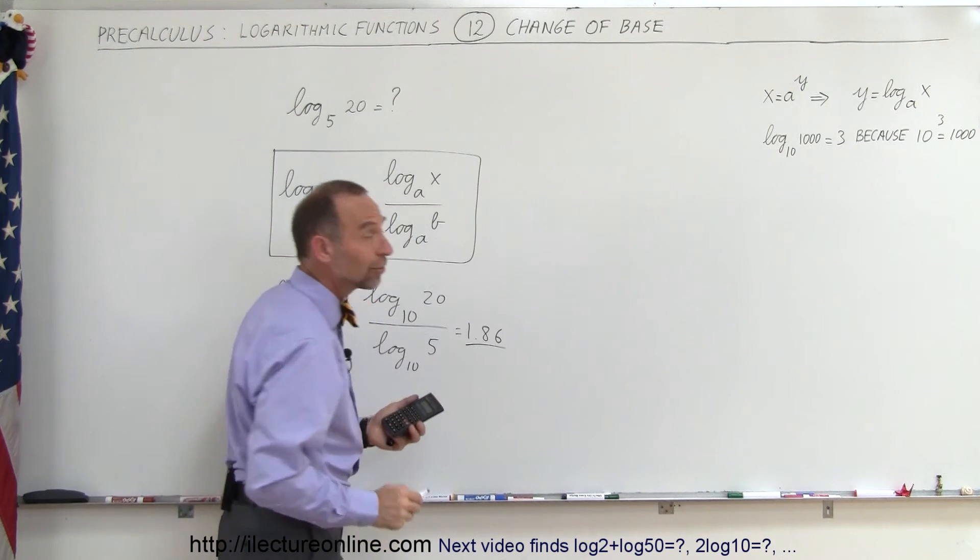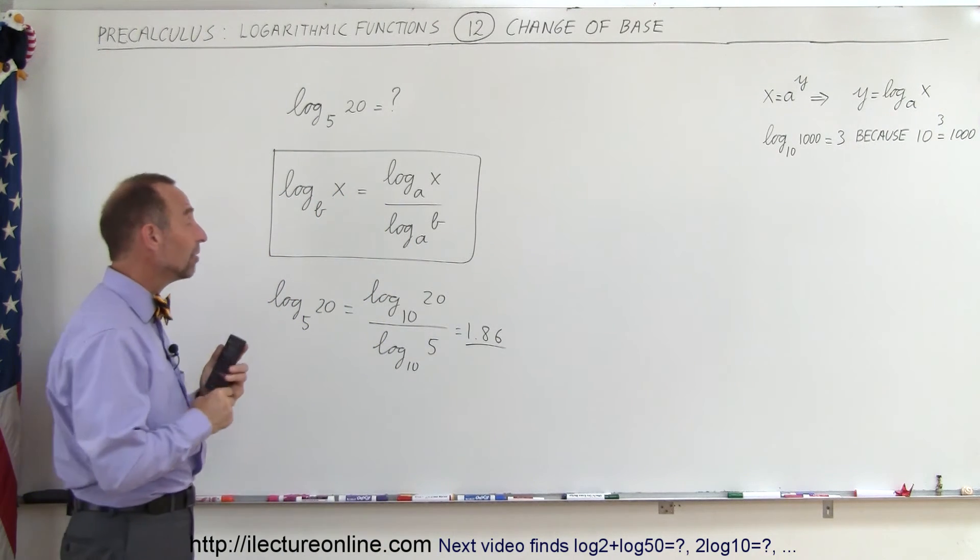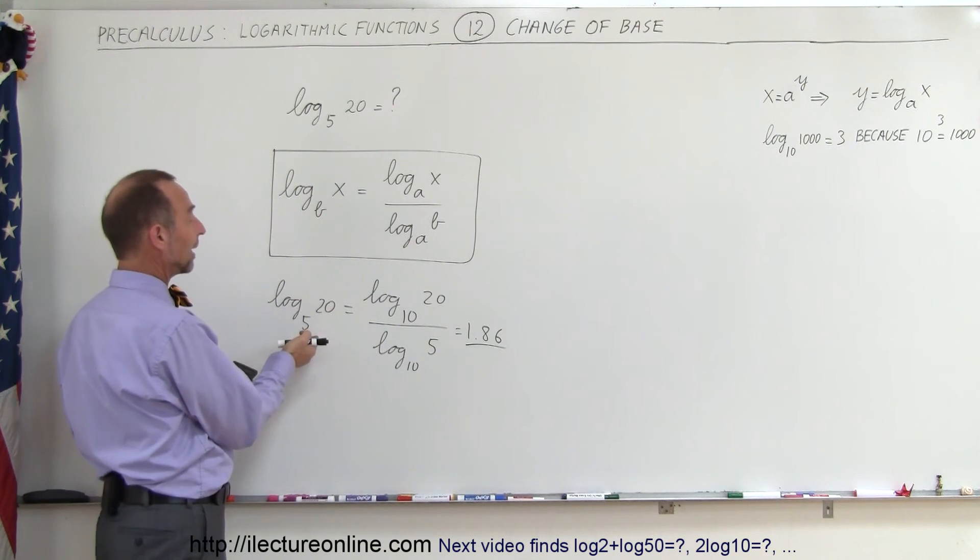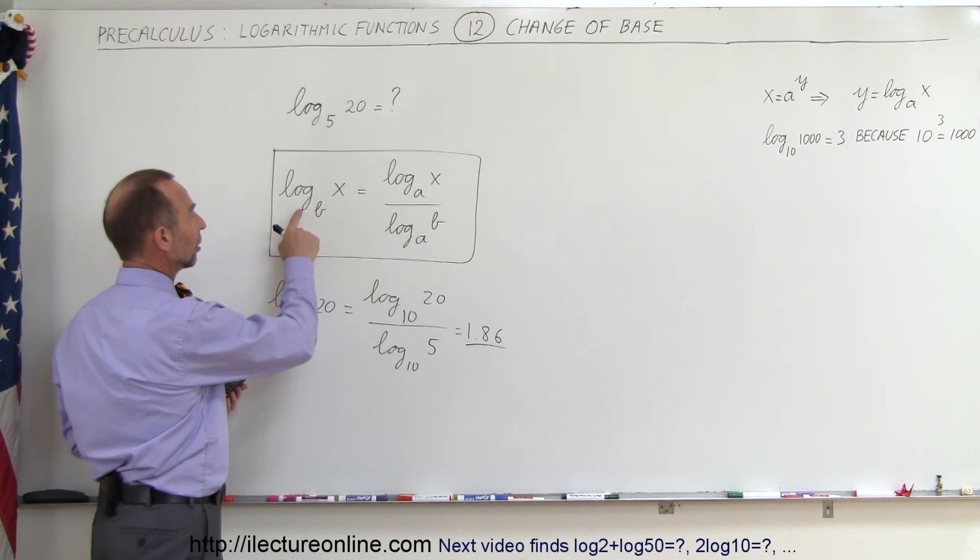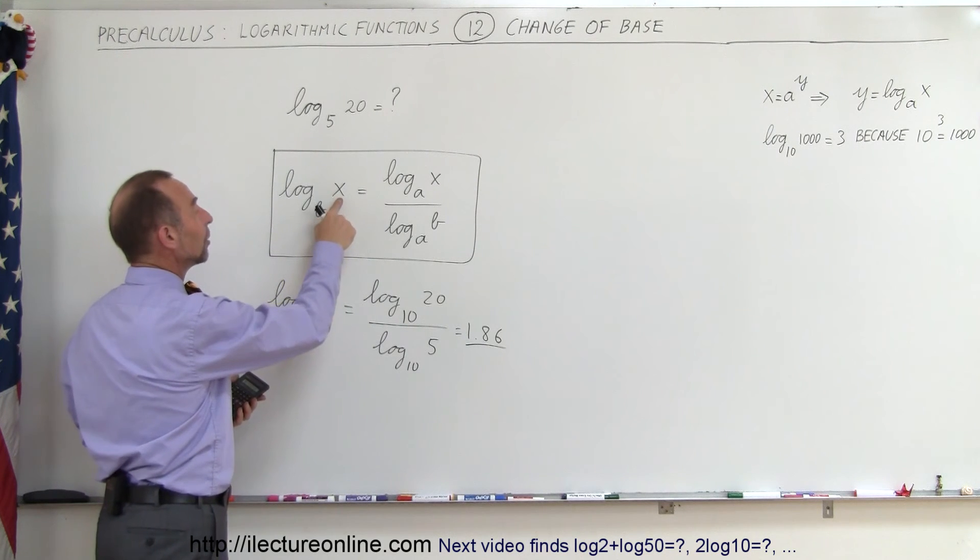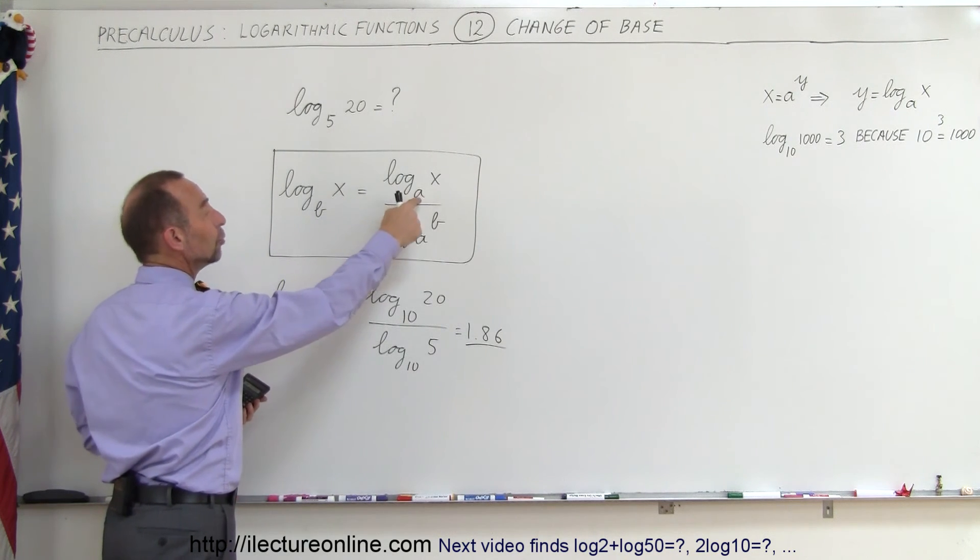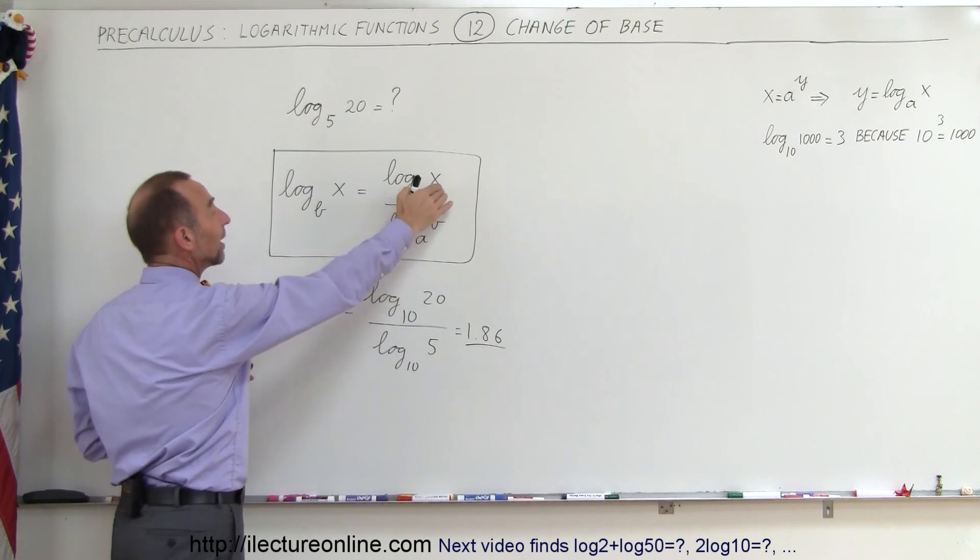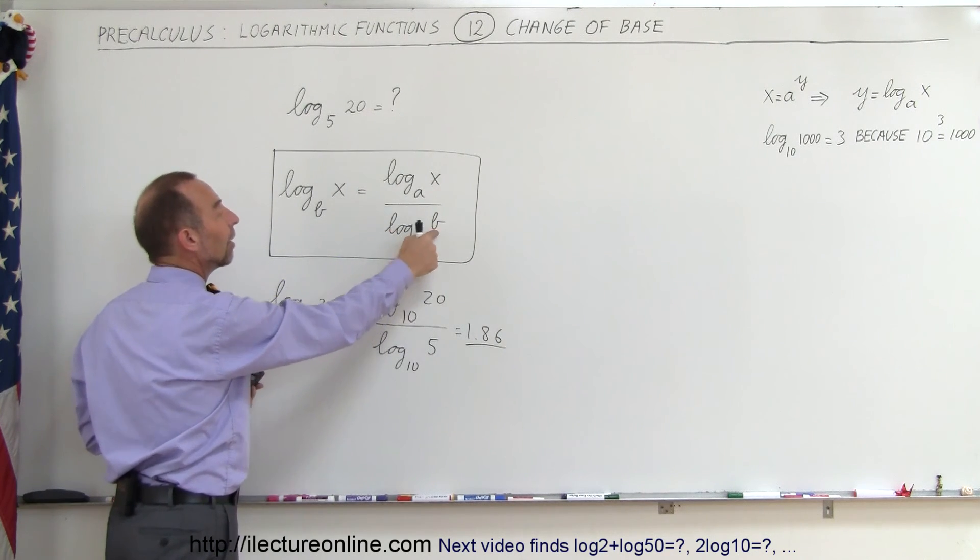And that's how we do that. So again, if you want to change the base for something that your calculator can't handle, you simply say the log of the base you can't handle of some number X is equal to the log of a known base, like the base 10 of X, divided by the log of 10 of base B.